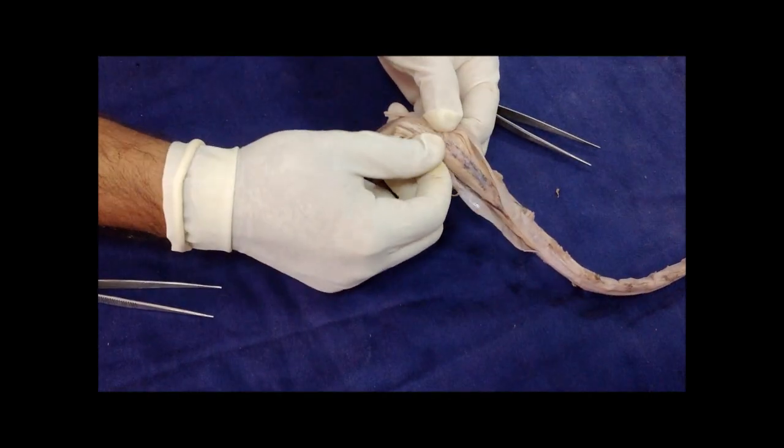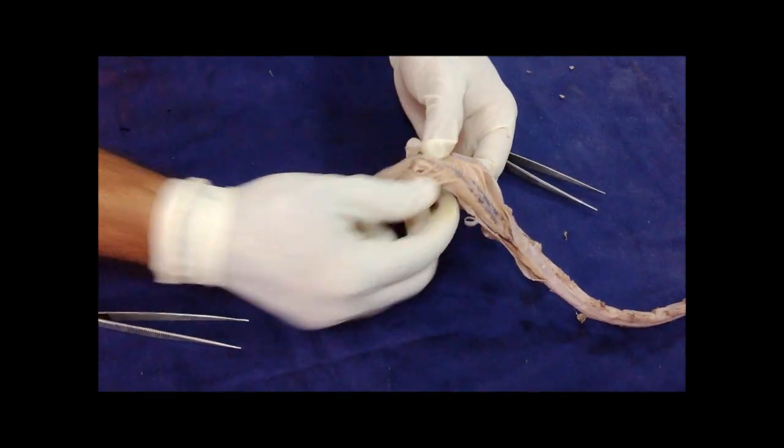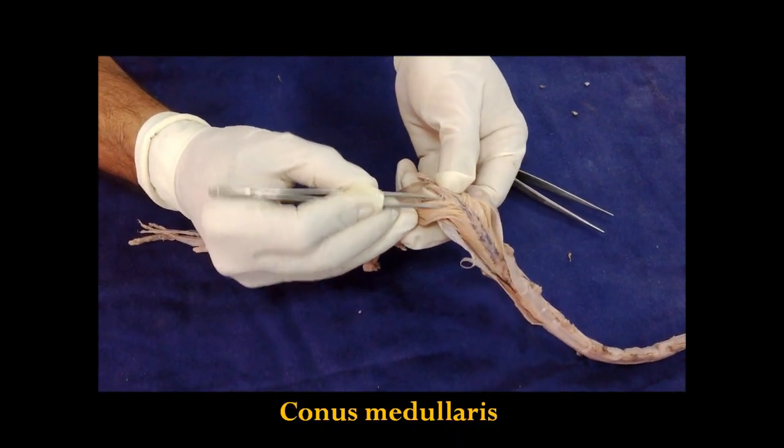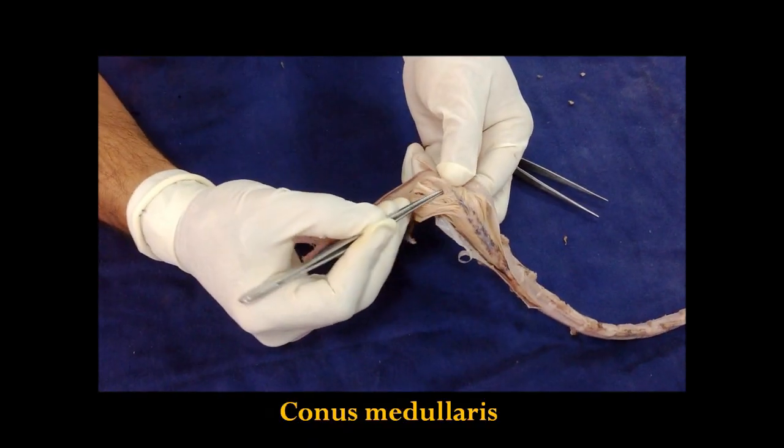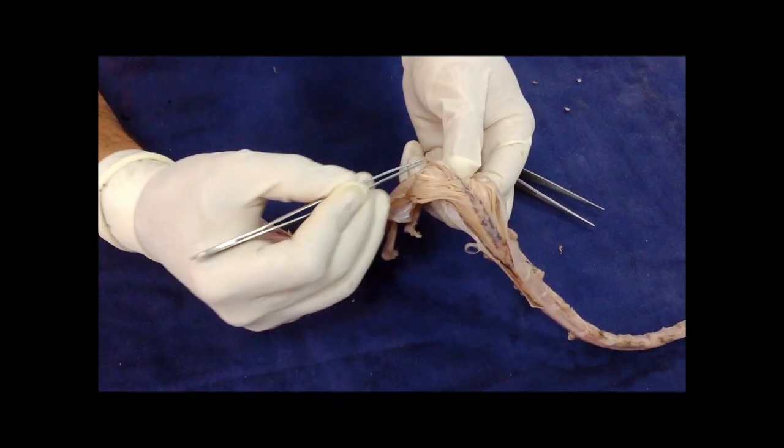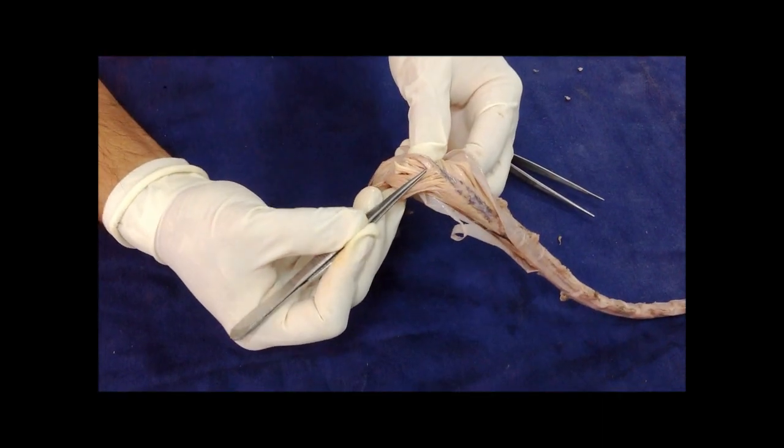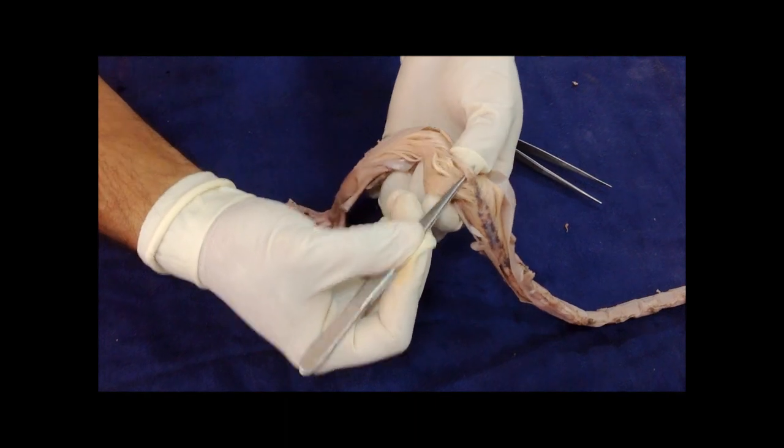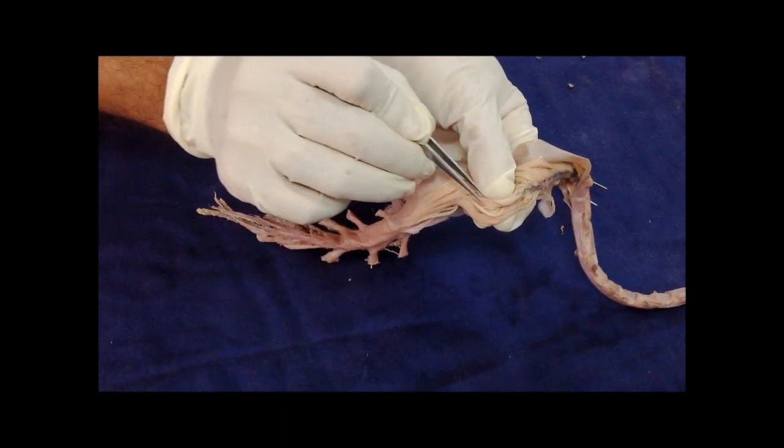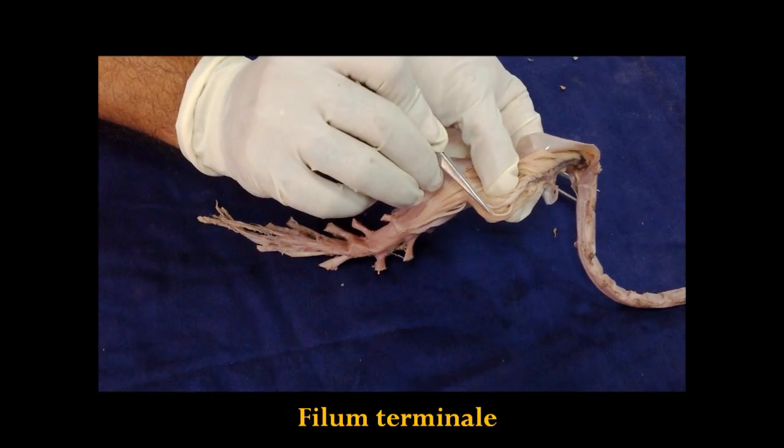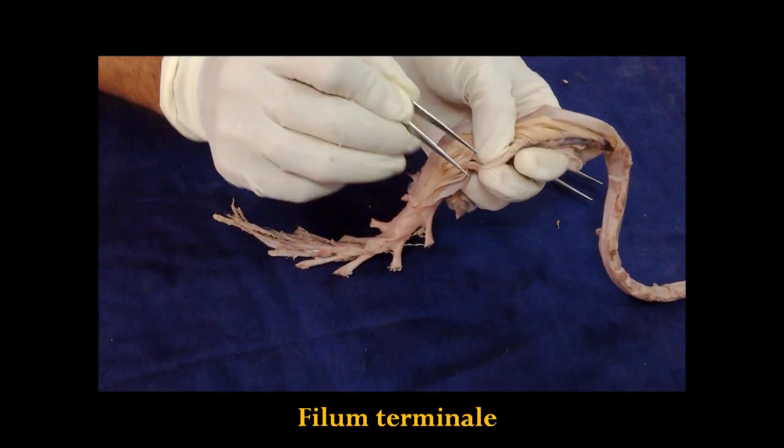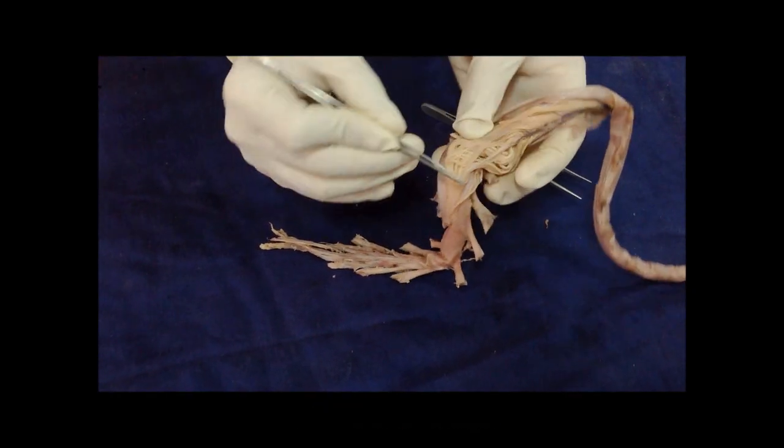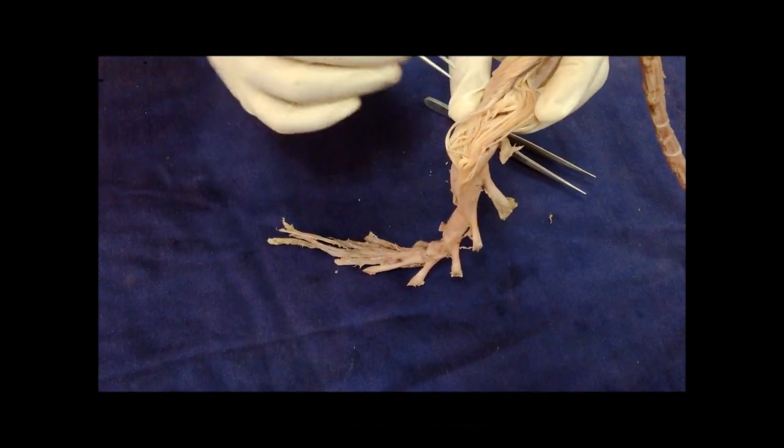Here we have the lower conical end of spinal cord. This is called conus medullaris. This is the conus medullaris. And the pia mater covering the conus medullaris hangs down like a tail. And that part is called filum terminale. This is the filum terminale which hangs down from the conus medullaris.